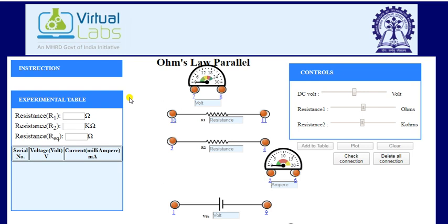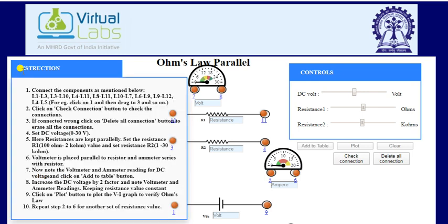On the left-hand side, there is a list of instructions which we have to follow to provide proper connection and then apply a DC volt across these resistances, and then finally draw a plot between these resistances, between V and I.